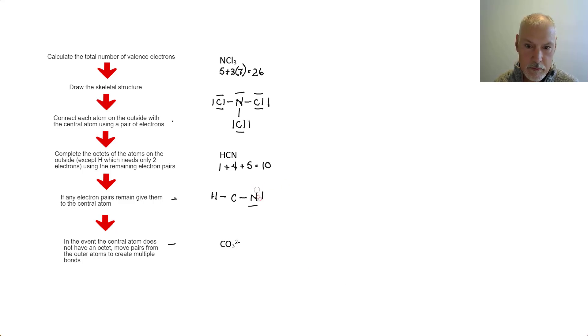So as a result, I'm going to remove that pair and that pair so that they're now being shared with that central atom, bringing both the carbon and the nitrogen with octets, four pairs of electrons.